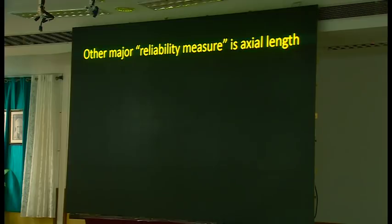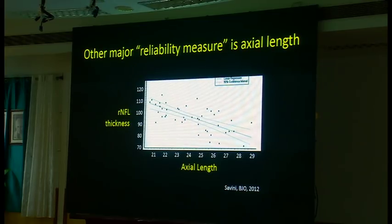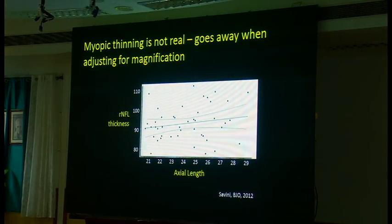We don't consider this a reliability factor but we really ought to, and that's axial length. This is a plot of retinal nerve fiber layer thickness against axial length, and you can see that as axial length becomes larger, RNFL thickness becomes thinner — in people with normal visual fields and no evidence of glaucoma. However, this is not really a true effect. If you adjust for the magnification effects that OCT applies, you don't see any relationship anymore. What appears as thinning with increasing myopia is really just a magnification artifact from the optics of the machine.